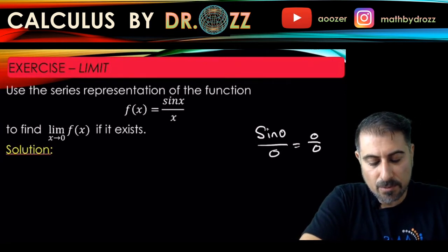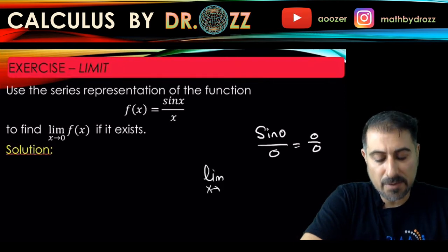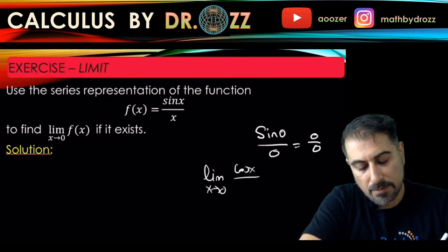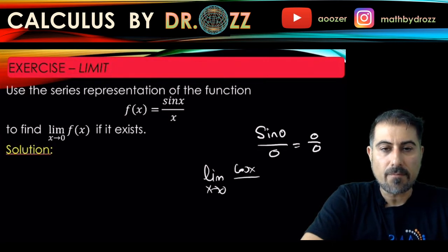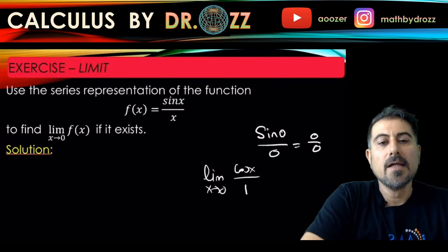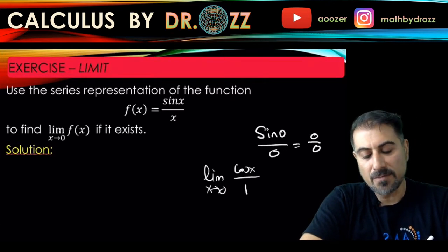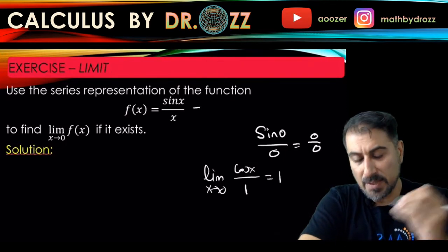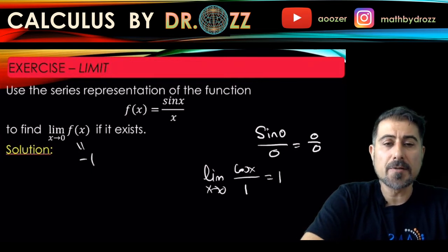L'Hôpital's rule allows us to take the derivative of the top and the bottom separately to get cos(x)/1. If you take the derivative of the bottom it's 1, let me just correct that. When you pass the limit now this is equal to 1, so you can find this limit to be exactly equal to 1.